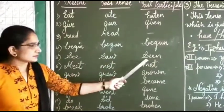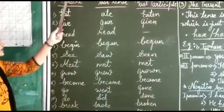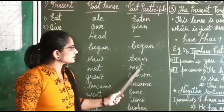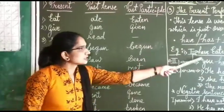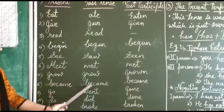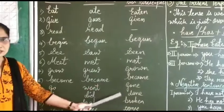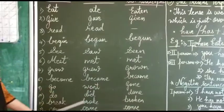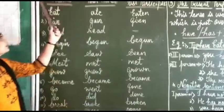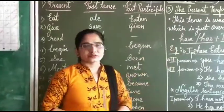See, saw, seen — 'seen' is used in the present perfect tense. Meet — meet is the present tense, past tense is met, and the past participle is met. Grow, grew, grown. Become, became, become. Go, went, gone. Do, did, done. Break, broke, broken. Come, came, come. So these are the most important — first of all you have to learn them by heart, then you can use them easily in the present perfect tense.